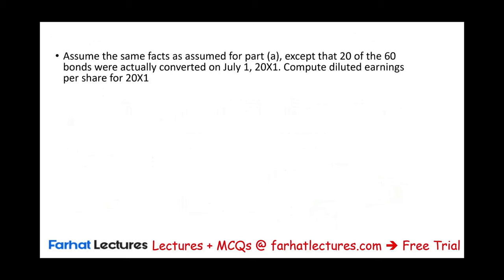Assume the same facts except that 20 of the 60 bonds were actually converted on July 1st. The answer will be the same as the first scenario. Why? Because 20 were actually converted, and for the remaining 40 we assume they are also converted — for diluted EPS, we assume everything is converted as of the beginning of the year.